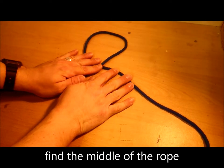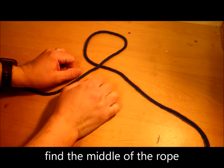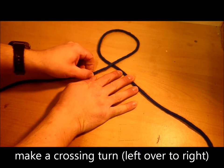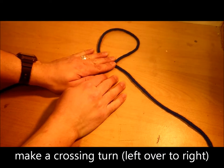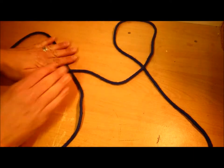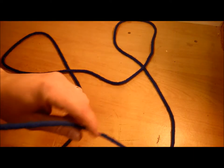Okay, so find the middle of your rope and do a twist in it, a crossing turn like that. Now first of all you need to make two loops on each side, one will be on your left and the other one will be on your right.